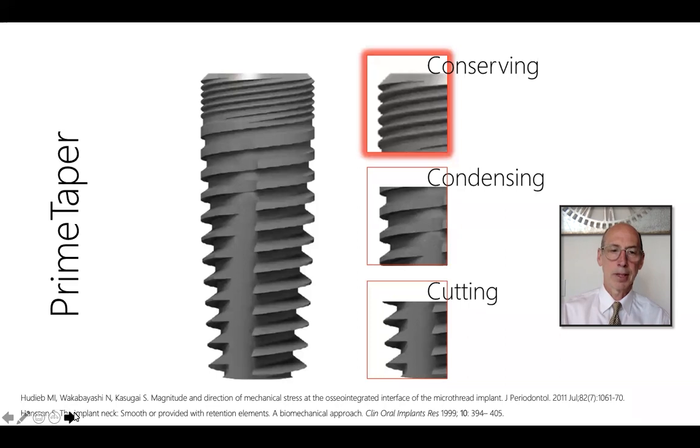So prime taper implants have a progressive thread design that includes cutting, condensing, and conserving threads. They are displayed against a tapered implant design which is well known for also enhancing the attainment of primary stability.